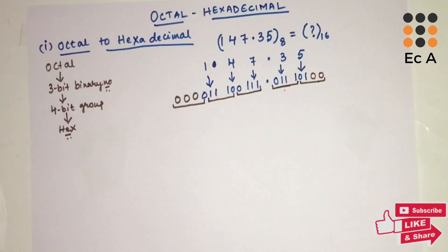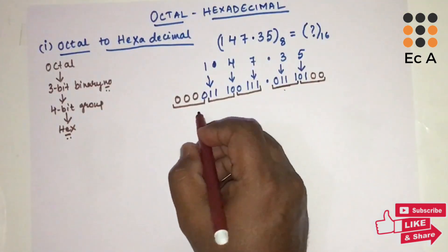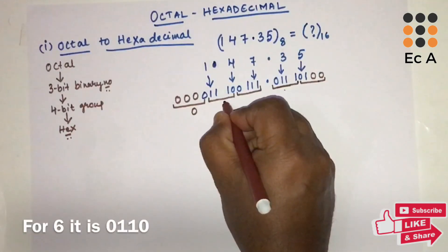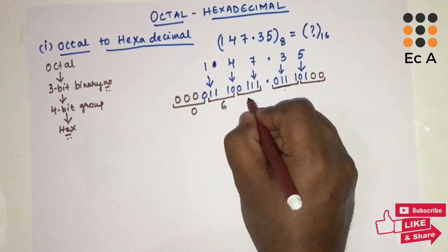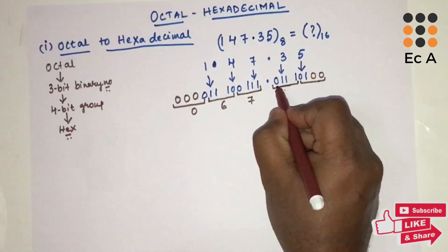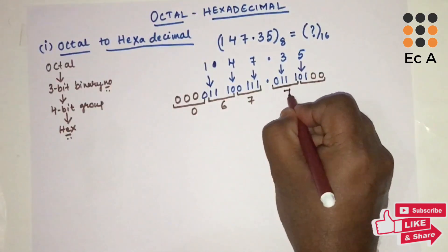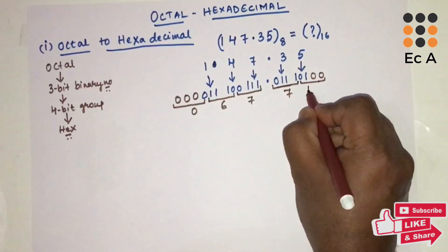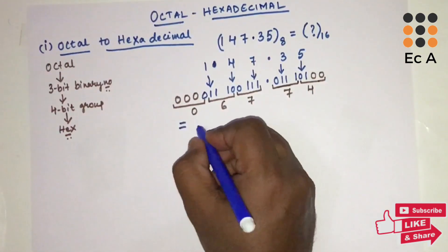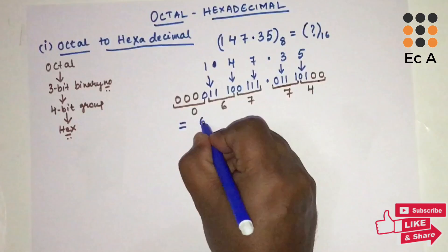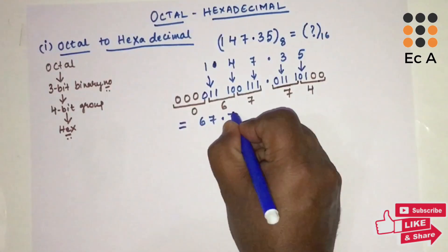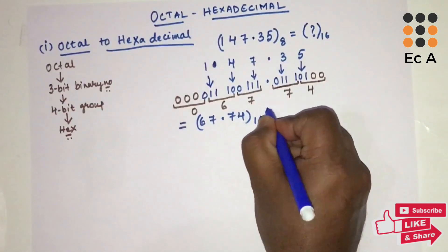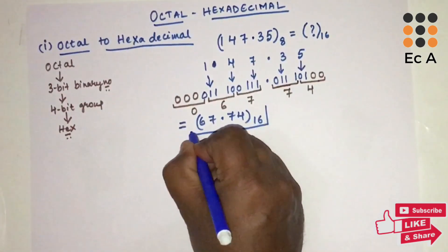Now let us write the equivalent hexadecimal number for each 4-bit group. The groups give us: 0110 is 6, 0111 is 7, then after the point 0111 is 7, and 0100 is 4. So the hexadecimal equivalent is 67.74 base 16. This is the hexadecimal equivalent of the given octal number 147.35.